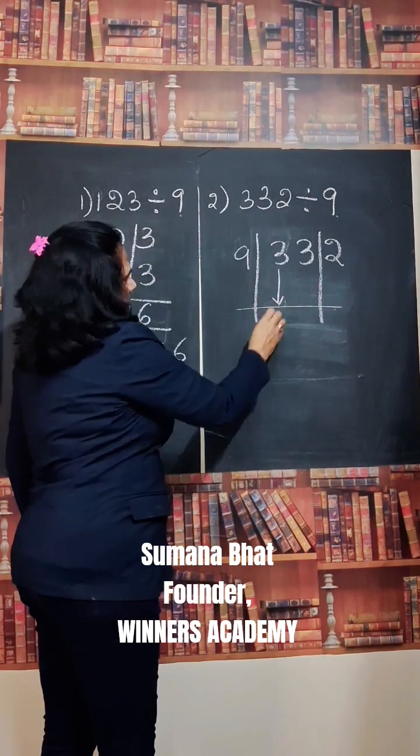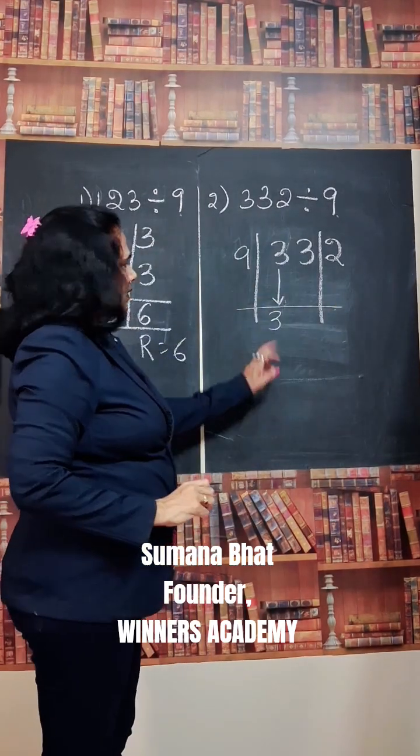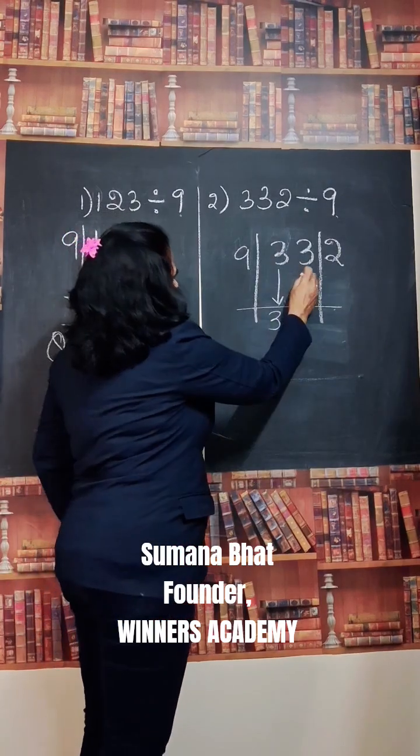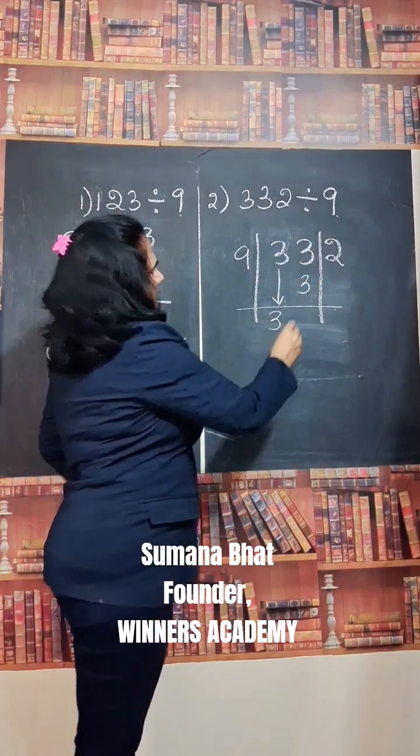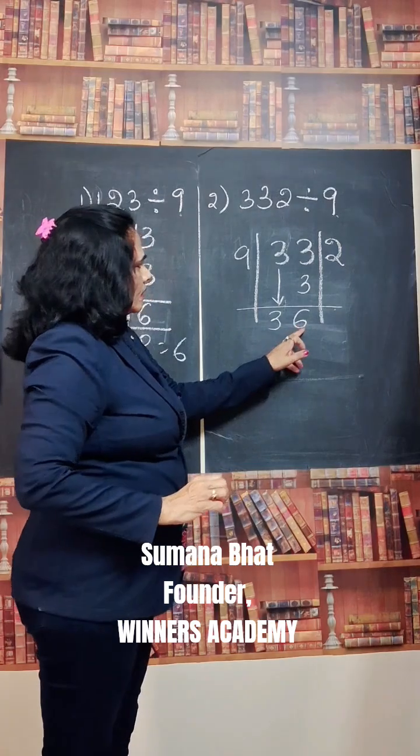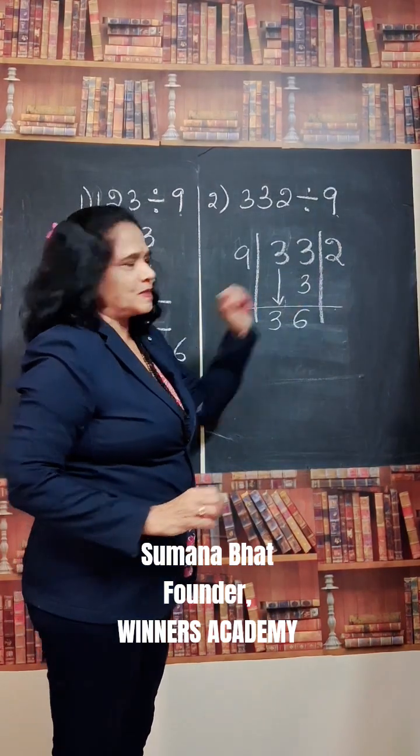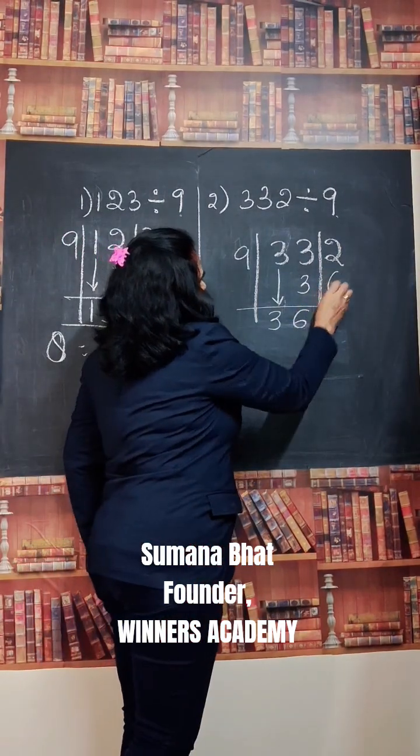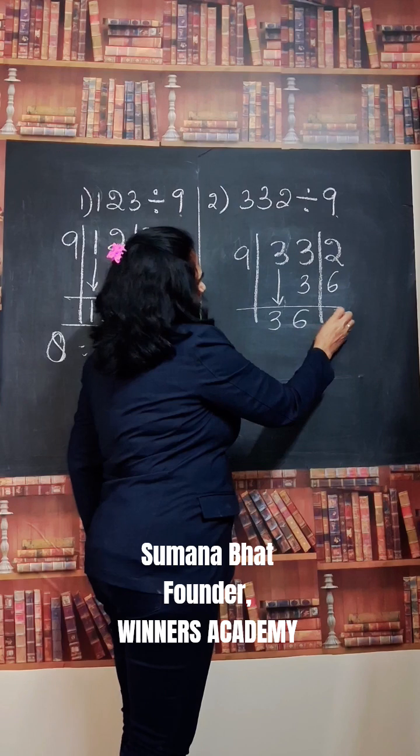Just write this 3 down. Add this 3 to the next number. 3 plus 3, 6. Write this 3 below the next number. That will be 2 plus 6, 8.